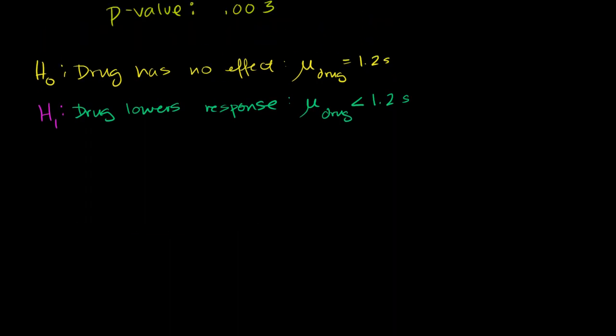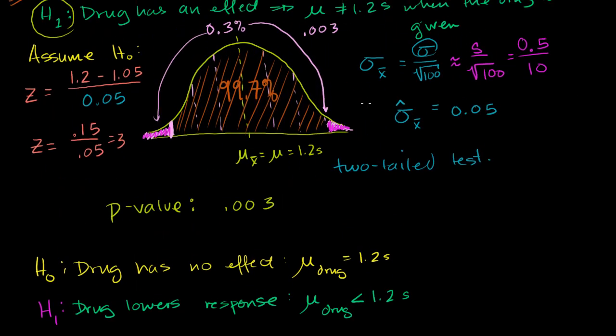Actually, I can just use the drawing that I had up here. You had your sampling distribution of the sample mean. We know what the mean of that was. It's 1.2 seconds, same as the population mean. We were able to estimate its standard deviation using our sample standard deviation. And that was reasonable, because it has a sample size of greater than 30. So we can still deal with a normal distribution for the sampling distribution.